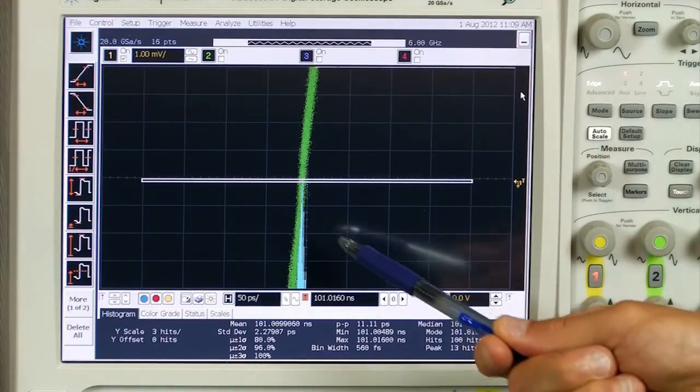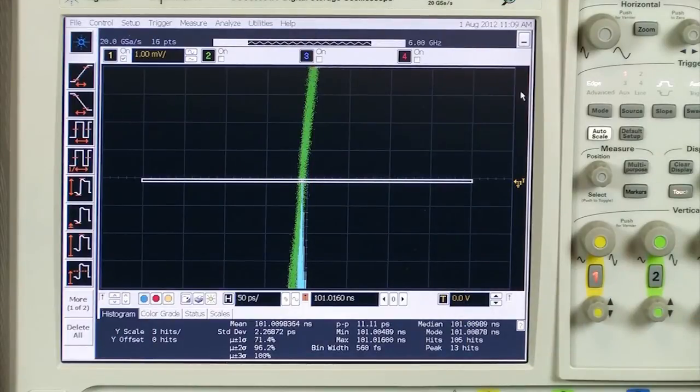You can barely see the histogram here, but we're looking at less than two picoseconds RMS jitter, superior jitter performance in True Form.